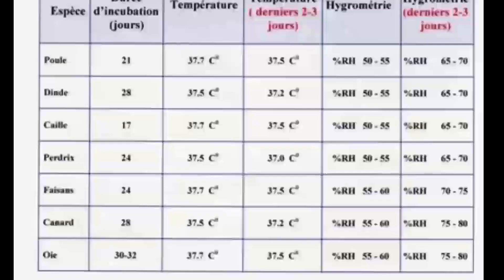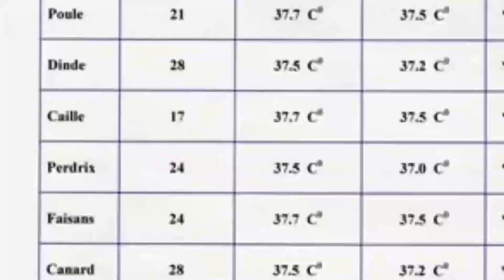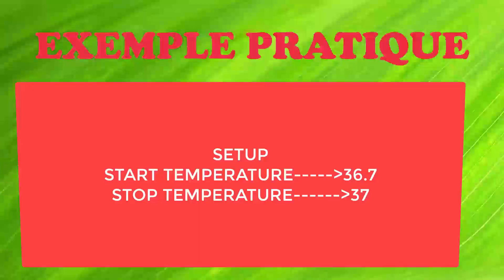For programming the thermostat for incubation needs, here is a table summarizing the temperature values to consider when incubating eggs for different categories of birds. These are fixed temperature values to consider when programming the thermostat. As a practical example, to incubate eggs at a required temperature of 37 degrees, we can program menu P0 (start temperature) at 36.7 degrees and menu P1 (stop temperature) at 37 degrees. This means when the temperature reaches 37 degrees the thermostat output turns off, and when it drops to 36.7 degrees the incubator turns on its output — the heater and the fan.